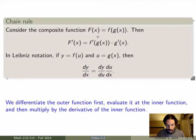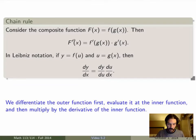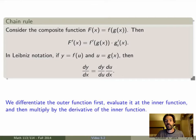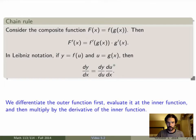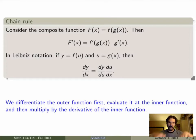If I take capital F of x to be the function little f of another function g of x, then the chain rule tells me the derivative of capital F is equal to: first, the derivative of the outer function little f evaluated at the inner function, times the derivative of the inner function. So you start outside and go inside. In Leibniz notation you write the same thing: differentiate the outer function first, evaluate at the inner function, then multiply by the derivative of the inner function.